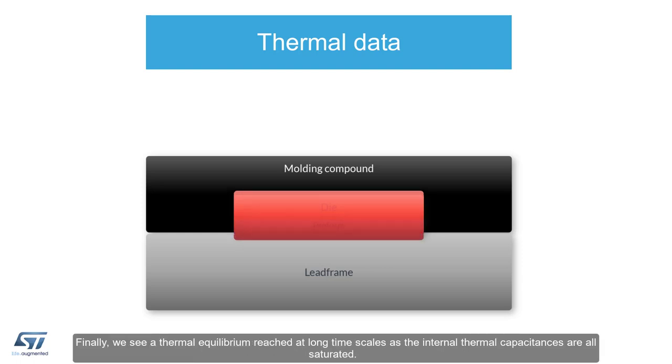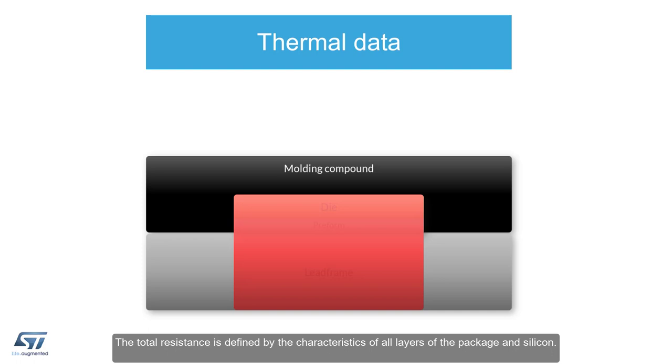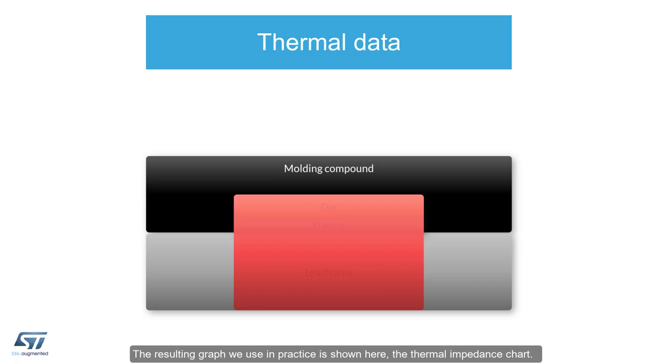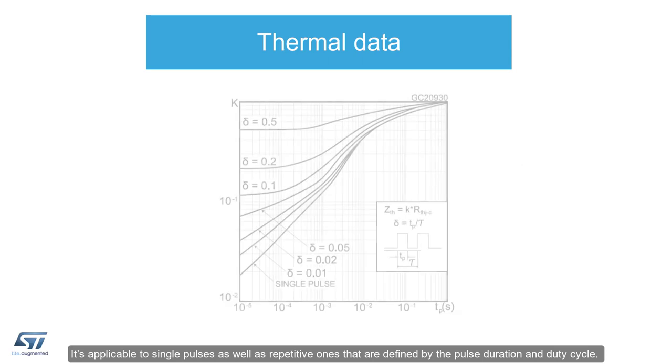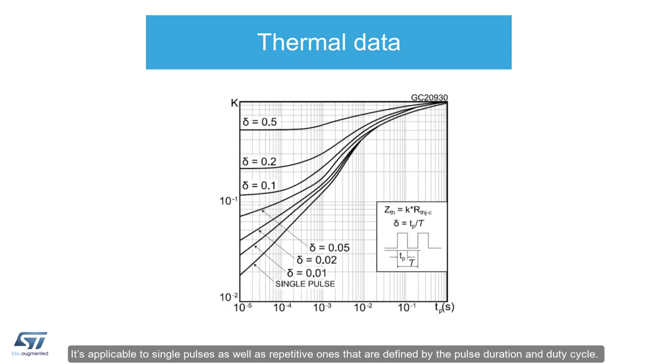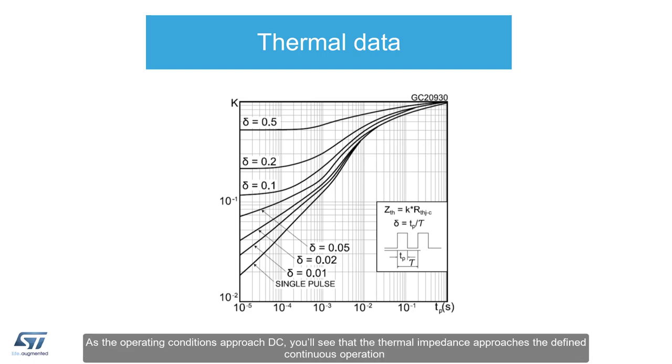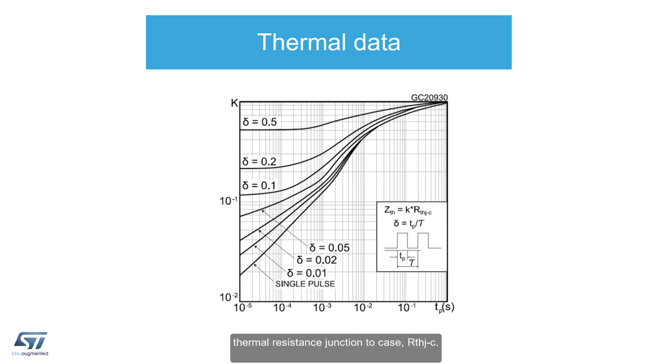Finally, we see a thermal equilibrium reached at long timescales as the internal thermal capacitances are all saturated. The total resistance is defined by the characteristics of all layers of the package in silicon. The resulting graph we use in practice is shown here, the thermal impedance chart. It's applicable to single pulses as well as repetitive ones that are defined by the pulse duration and duty cycle. As the operating conditions approach DC, you'll see that the thermal impedance approaches the defined continuous operation thermal resistance junction to case, RθJC.